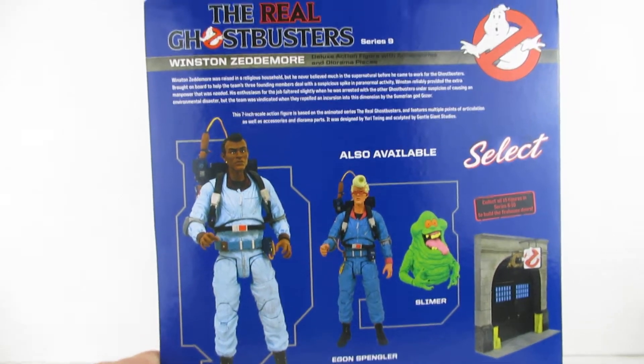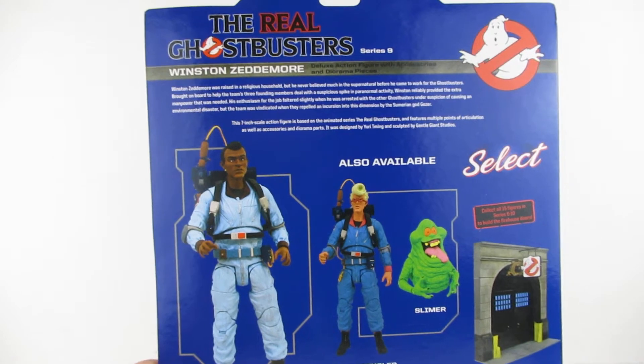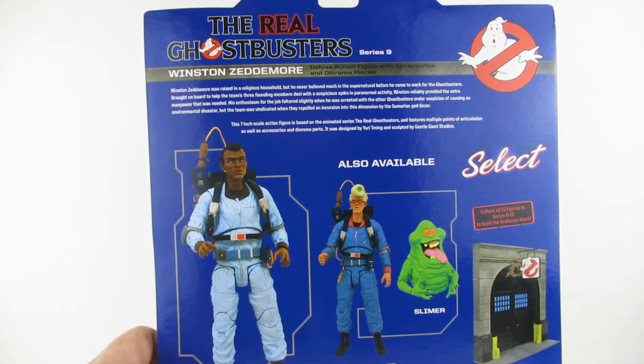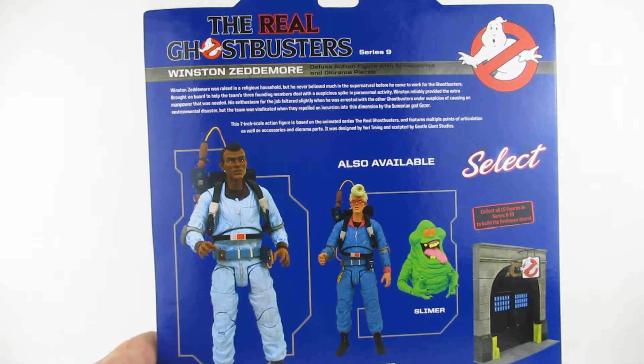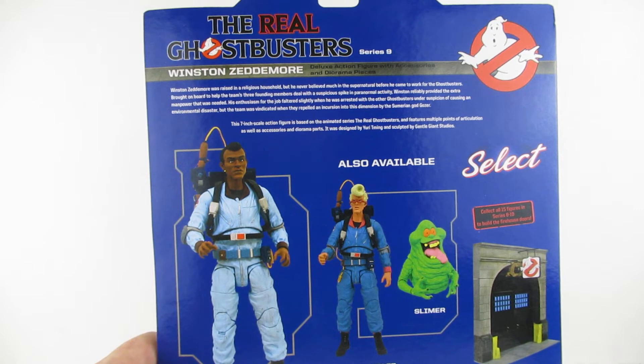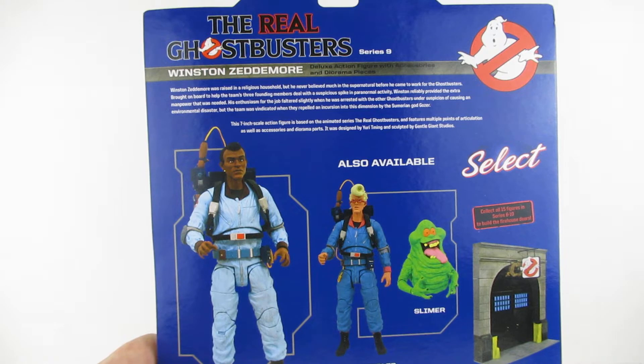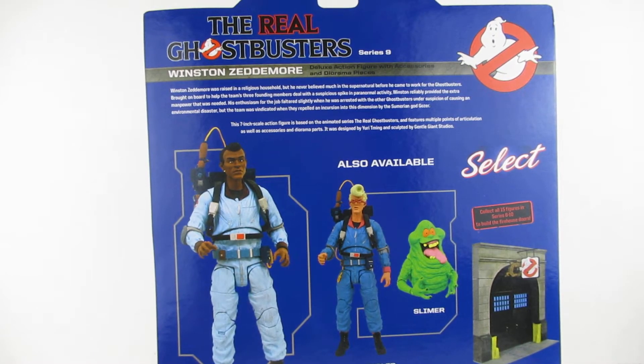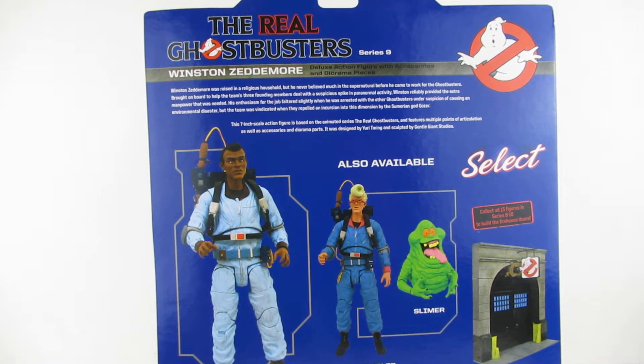On the back here it says Winston Zeddemore was raised in a religious household but he never believed much in the supernatural before he came to work for the Ghostbusters. Brought on board to help the team's founding members deal with a suspicious spike in paranormal activity, Winston's reliability provided the extra manpower that was needed. His enthusiasm for the job faltered slightly when he was arrested with the other Ghostbusters under suspicion of causing an environmental disaster, but the team was vindicated and they repelled an incursion into our dimension by the Sumerian god Gozer.